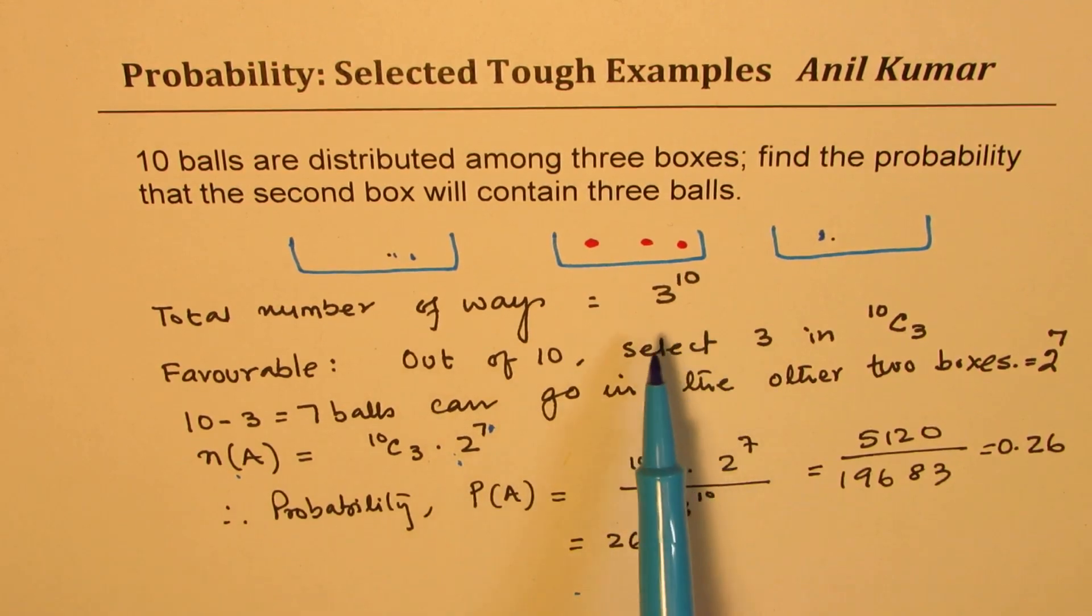Total, of course, we have 3 different boxes and 10 balls, so 3 to the power of 10, which comes in the denominator. We get our answer as 26%. I hope that makes sense.